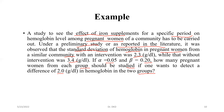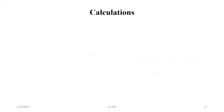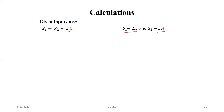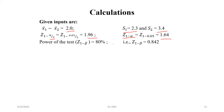In the solution, the given values are: x1 bar minus x2 bar equals 2, standard deviation of the first group s1 equals 2.3, standard deviation of the second group s2 equals 3.4. The normal deviate value z1 minus alpha by 2 equals 1.96 for two-sided, and for one-sided z1 minus alpha equals 1.64. Power of the test is 80%, so z1 minus beta equals 0.842.